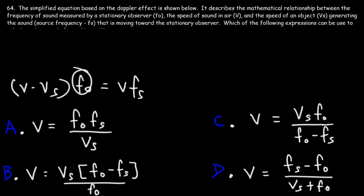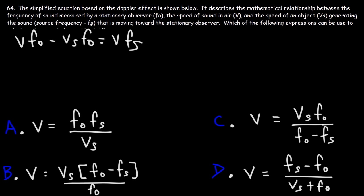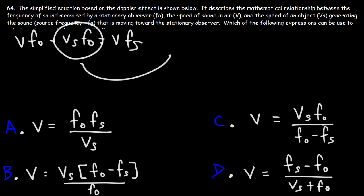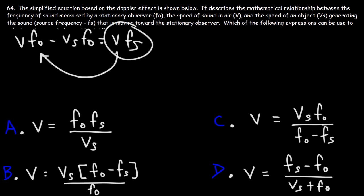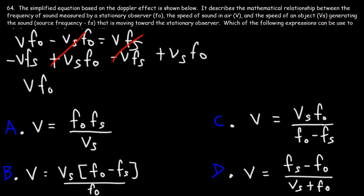Our next step is to distribute Fo, giving us Fo times V minus Fo times Vs. Now, we move the negative Fo·Vs term to the right side (it becomes positive) and move V·Fs to the left side (it becomes negative). So adding Vs·Fo to both sides and subtracting V·Fs from both sides gives us V·Fo minus V·Fs equals Vs·Fo.